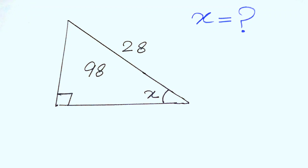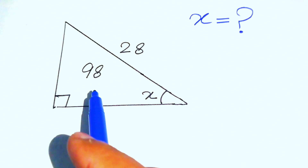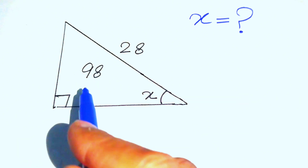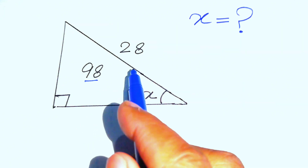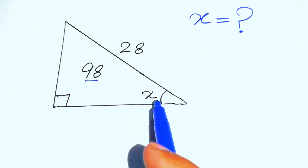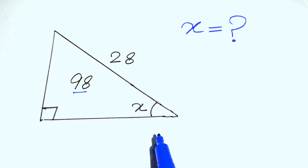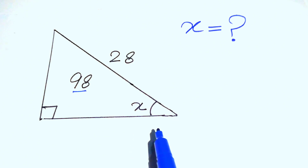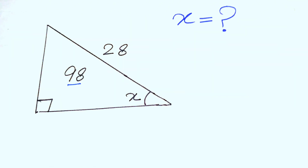Hello everyone, welcome back to the Map of Mathematics. In this video we are going to solve a nice geometry challenge. We have a right triangle in which the area is given as 98 square centimeters, the length of one side is 28, and this angle is denoted by x. Our goal is to find the value of angle x.